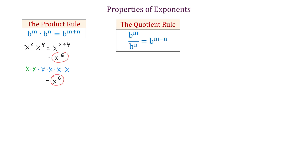The next property is the quotient rule, and this is b to the m's power divided by b to the n's power equals b to the power of m minus n. So when we divide two expressions that have the same base, we need to subtract the exponents.